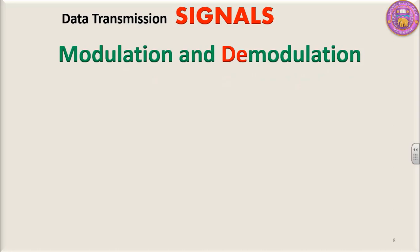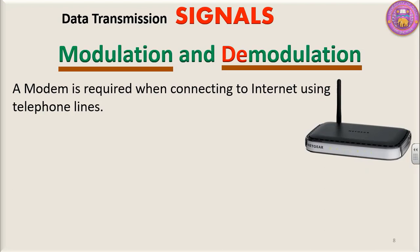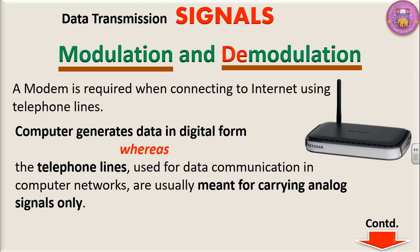Modulation and demodulation. A modem is required when connecting to the internet using telephone lines. In case we intend to send a message from one place to another, we need to have a modem. In case we need to get connected to the internet, again we need a modem if we are using telephone lines. Computer generates data in digital form, whereas the telephone lines used for data communication in computer networks are usually meant for carrying analog signals only — signals in the form of waves.